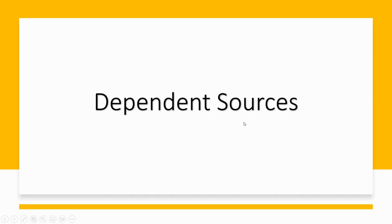Hey everyone, welcome back to today's video. As a continuation to the topic on electrical energy sources, today we're going to discuss dependent sources. Dependent sources are electrical components whose output is determined by the current or the voltage of another element in the circuit. A source could be either a voltage source or a current source.